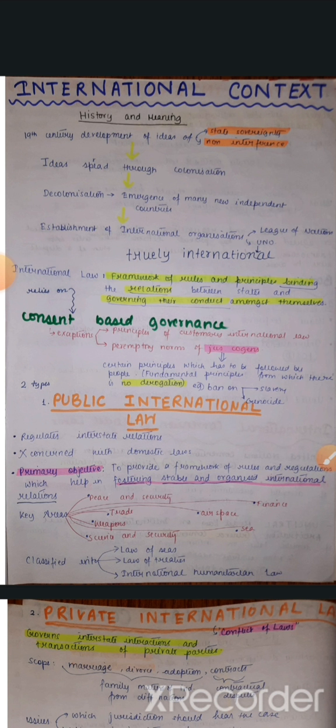Now let's understand when did these concepts emerge first. We can trace back the concepts right from the time of the European Renaissance, and when different civilizations like the Roman Empire or ancient Middle East developed all this, we can know about international law.